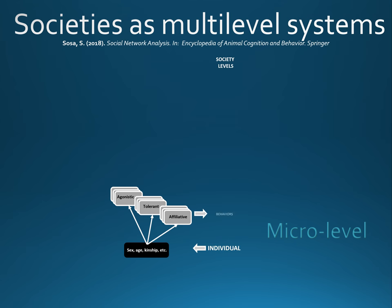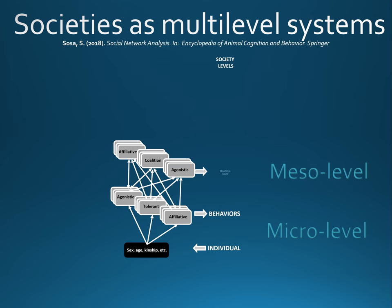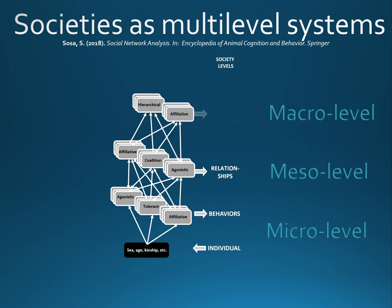In the next level, those behaviors allow individuals to create affiliative, coalitional, and agonistic relationships. Those relationships build the final level: the hierarchical and affiliative structure among others. And together, all these levels build a social structure or society.